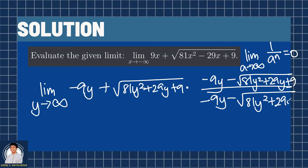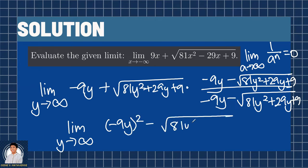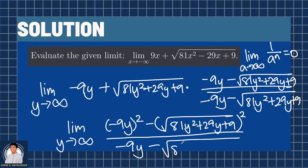Using difference of two squares, this limit becomes quantity negative 9y squared minus the square root of quantity 81y squared plus 29y plus 9 and close in parentheses, squared all over negative 9y minus square root of quantity 81y squared plus 29y plus 9.